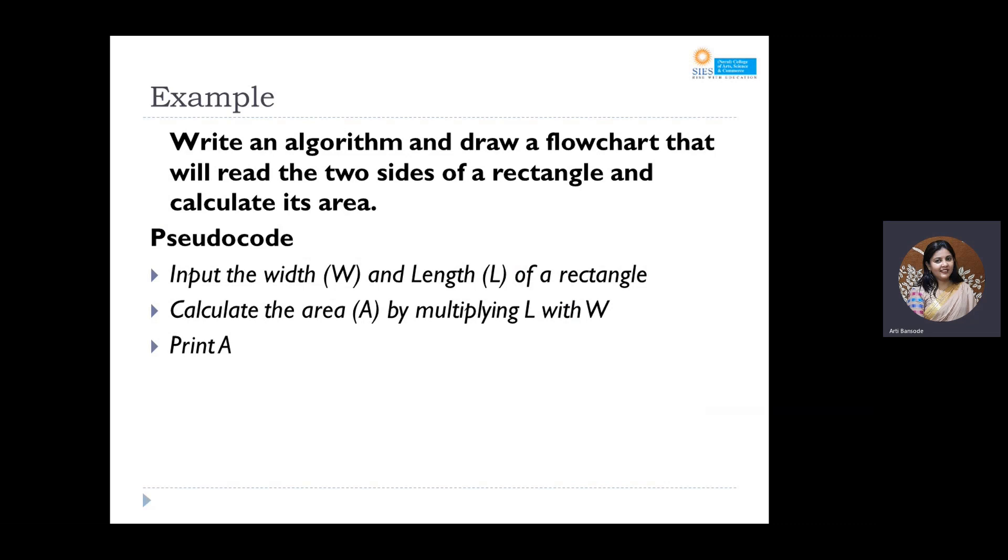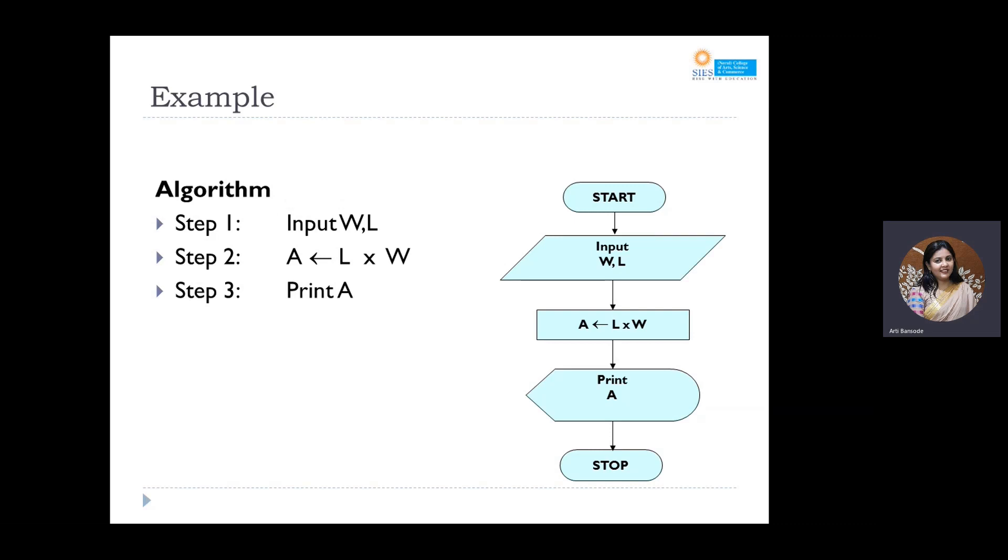The pseudocode is simple English words—you are writing sentences which anybody can understand. An algorithm is specific where we talk about the variables. W and L are called as variables in programming. Variables are memory locations which store values. So there are two variables, W and L.